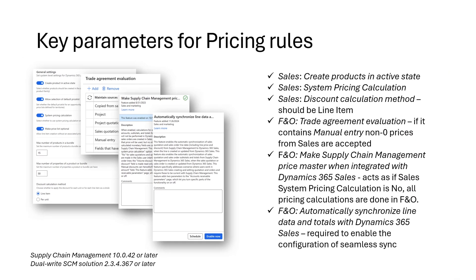These are the key parameters for determining the pricing master and the pricing rules when using dual-write — a few in Sales and a few more in Finance and Operations. In Sales, the 'create products in active state' setting: if set to no, products synced from Supply Chain Management will have a draft status and need to be activated in the Sales app. The sales discount calculation method should be set to line item when integrating with Supply Chain Management pricing to avoid rounding issues.